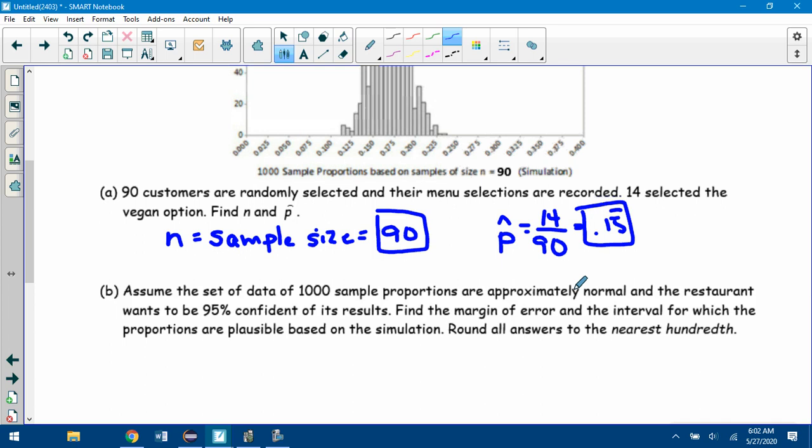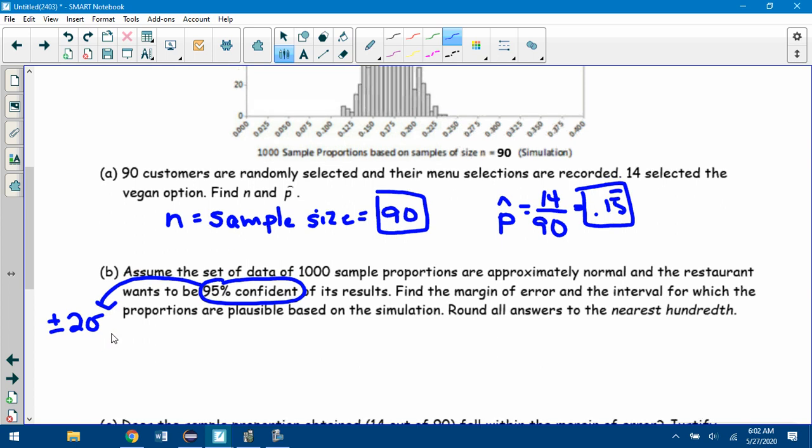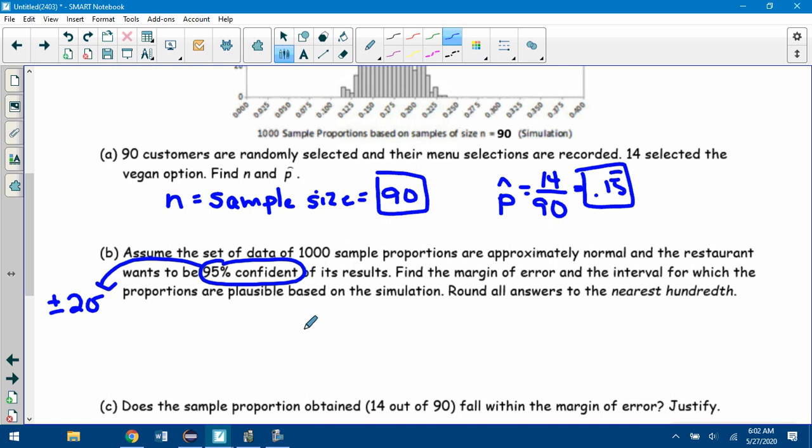It says assume the set of data of 1,000 sample proportions are approximately normal and that the restaurant wants to be 95% confident of its results. Find the margin of error and the interval for which the proportions are plausible based on this simulation. Round all answers to the nearest hundredth. So you see 95% confident, they're talking about plus or minus two standard deviations. That should be one hint. They want two things: the margin of error and the interval for which the proportions are plausible. Margin of error is plus or minus two standard deviations. Plausible interval is taking the mean plus or minus two standard deviations. So it's essentially the mean plus or minus the margin of error.